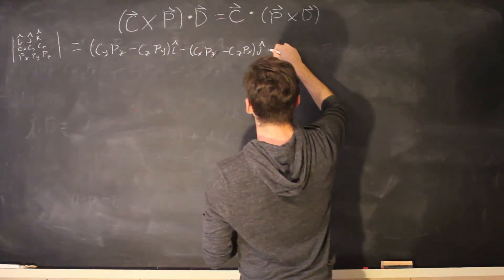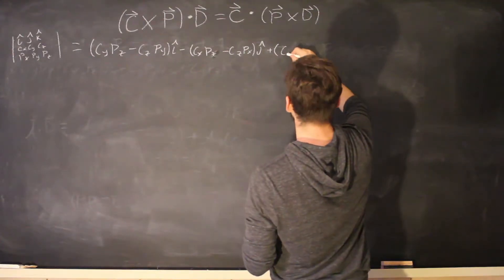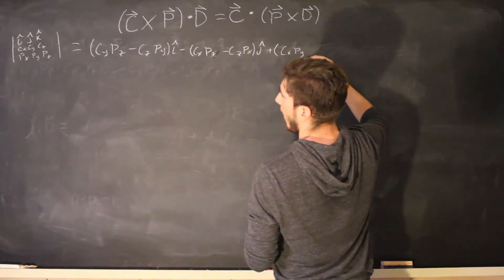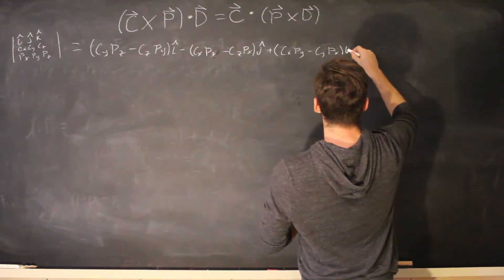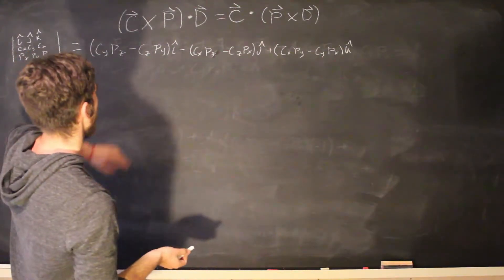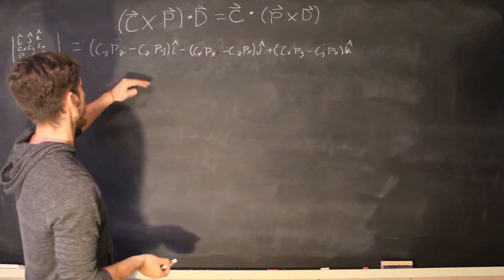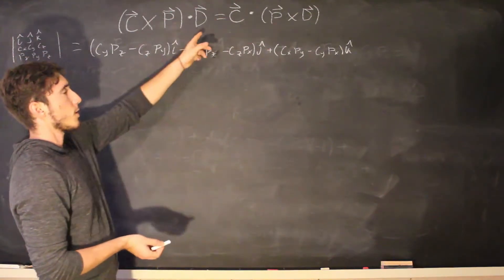P x, J hat plus C x, P y minus C y, P x, K hat, and the dot product will be the distribution of all of the components of our new resultant cross product to the components of D.